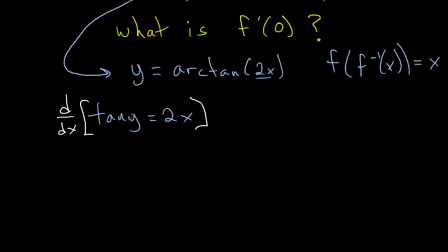So the derivative of the outer function, this tangent function, is just the secant squared of that inner function. And now we have to multiply by the derivative of this inner function y, which is a function of x. So we'll write dy dx, and this is equal to the derivative of 2x with respect to x.